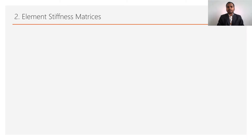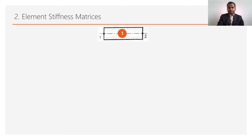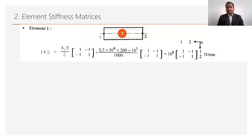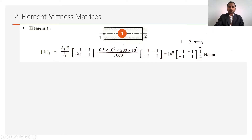The second step of FEM is to develop the element matrices. For whatever number of elements are available after discretization, you have to prepare the elemental stiffness matrix for each element. Starting with element number 1, having nodes 1 and 2, the stiffness matrix equation is: K = (AE/L) × [1, -1; -1, 1].